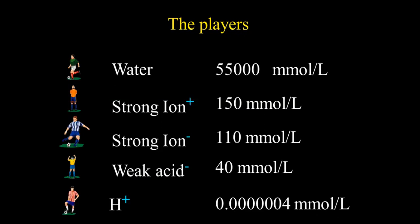These are the players. We have water. In one liter of water, we have 50,000 millimoles. Then we have strong ions, which are the ions that are always in a given electrical status in solution. So when the sodium loses its own electron in outside shell, it becomes positive. The chlorine keeps another electron to complete its outside shell and is always negative. So this is the framework on which the acid-base equilibrium moves. Then we have the weak acid.